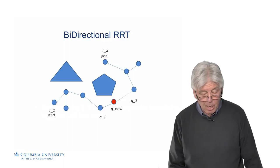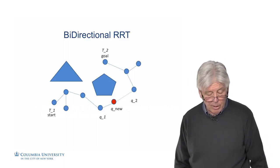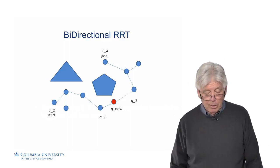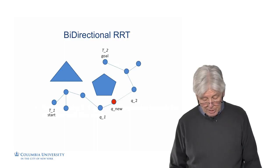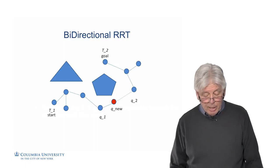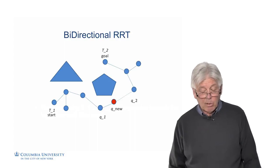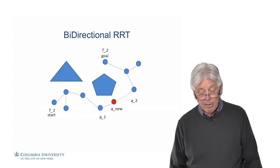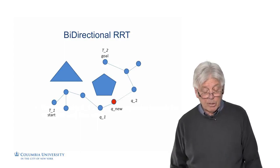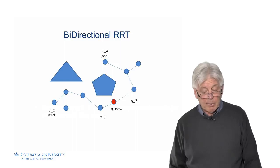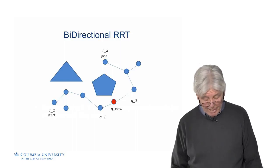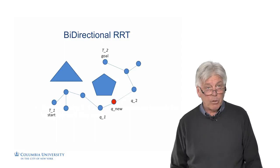You can see here we have a start T1, a goal T2, and we keep building these trees. Eventually we get to a point where QNU was added to tree T1. At that point, then that becomes the goal for tree T2. We can go find its nearest neighbor as Q2, and then we can create a link, and now we have a path for this bidirectional RRT.